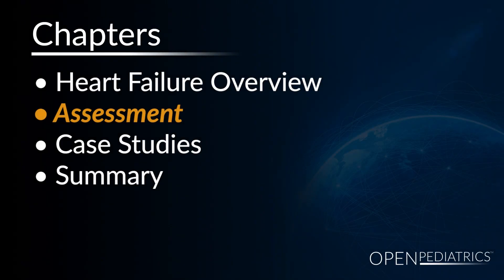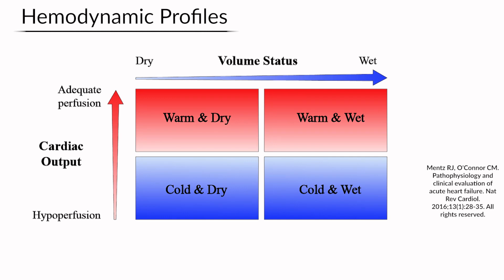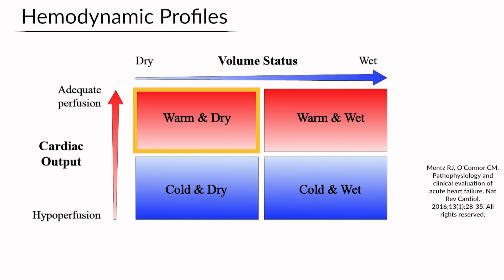When initially evaluating a patient with heart failure, it is helpful to think of them in the context of four hemodynamic profiles. Along the left side we have cardiac output from hypoperfusion to adequate perfusion, and along the top we have volume status from dry to congested or wet. In the northwest quadrant we have warm and dry, which is the ideal status for our patients — they have good perfusion and no evidence of volume overload.